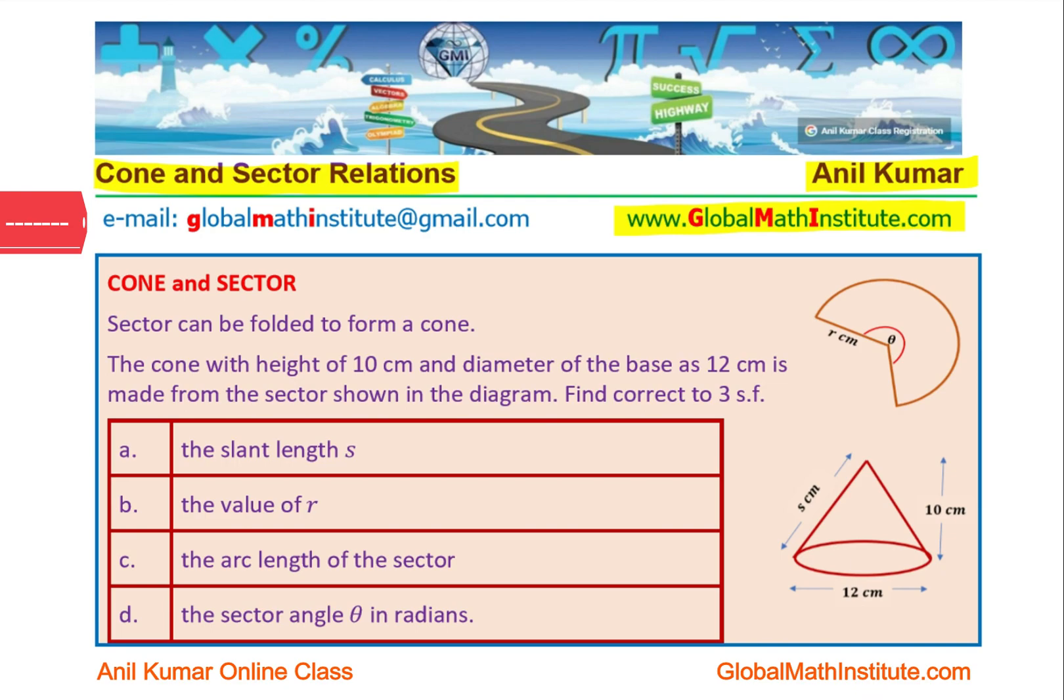Now, let us try to figure these out one by one. In case you want to learn from me, you can always send an email on the address given. Now, to find the slant height, we are given the cone with diameter of the base 12 cm, so the radius will be 6. Solve this problem on a fresh page.